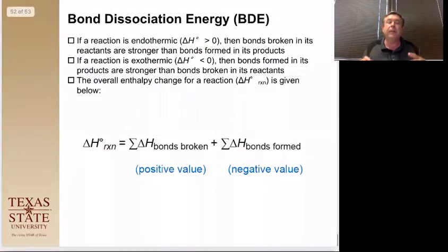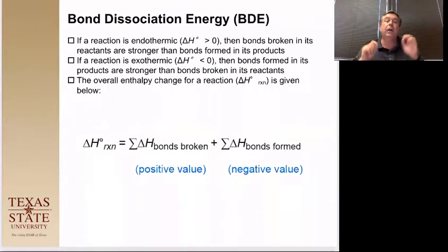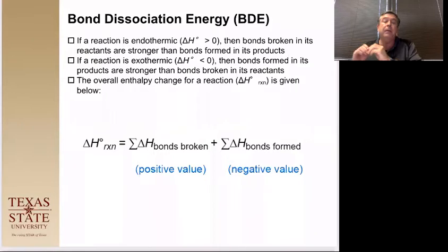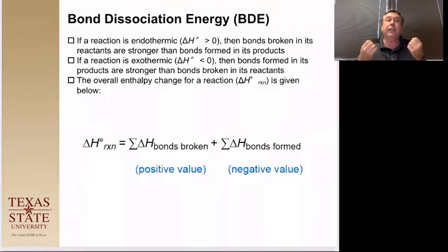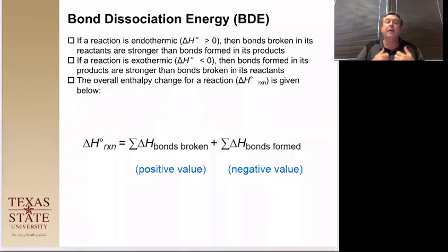The entire delta H of the reaction is going to be the sum of all the bonds that have been broken — those have positive values — plus all the bonds that were formed, which have negative values. Bonds being broken took energy, so you dumped energy in to break them apart. When bonds form, they are more stable and release energy — they release heat. So bonds forming have a negative delta H. A positive value means absorbing heat to reach that higher energy state.